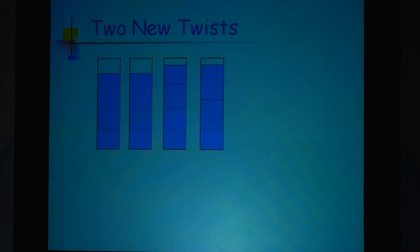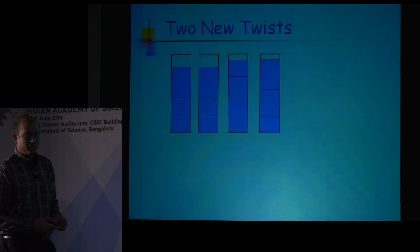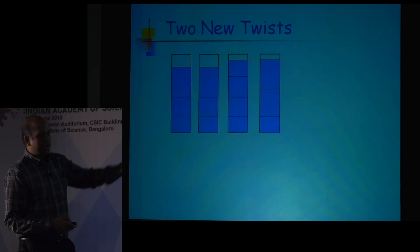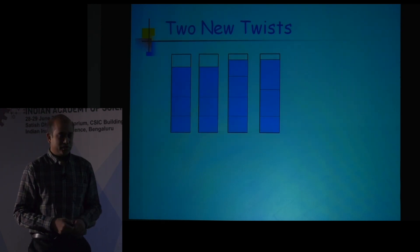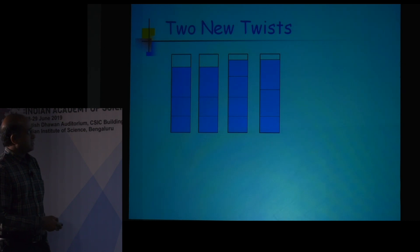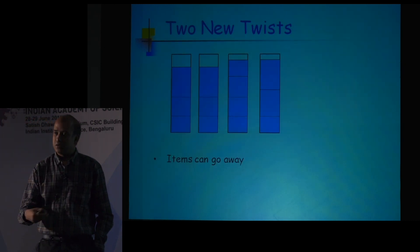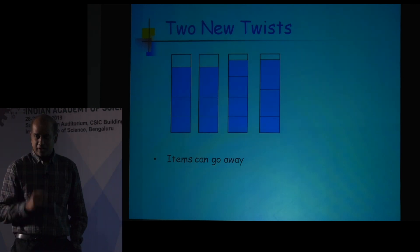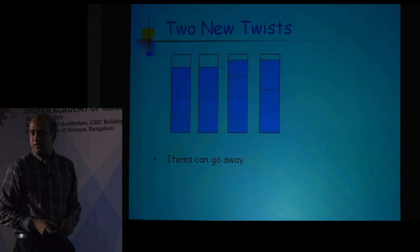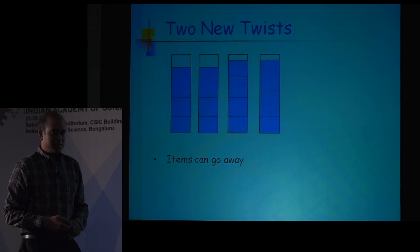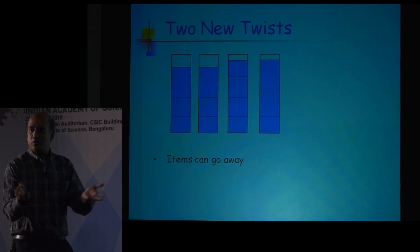Let me talk about some of the problems we have been working on in this domain. What we have done is add richer elements to this model. We added two new twists: one is that items can go away. As they arrive, at some point they finish and just go away, which is very natural in modern settings where you process something and then it is done.